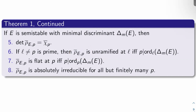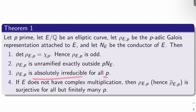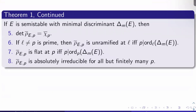What happens at P? At P, you should replace the condition 'unramified' with 'flat.' Rho-bar_{E,P} is flat at P if and only if P divides the P-adic valuation of delta_M(E). You get essentially the same condition equivalent to flatness as you had for unramification, just changing L to P — which is good evidence that 'unramified' should be replaced at P with 'flat.' This is not obvious; it's a deep result connecting inertia with finite flat group schemes. As for absolute irreducibility, rho-bar_{E,P} is absolutely irreducible for all but finitely many P — unlike rho_{E,P}, which was absolutely irreducible for all P.